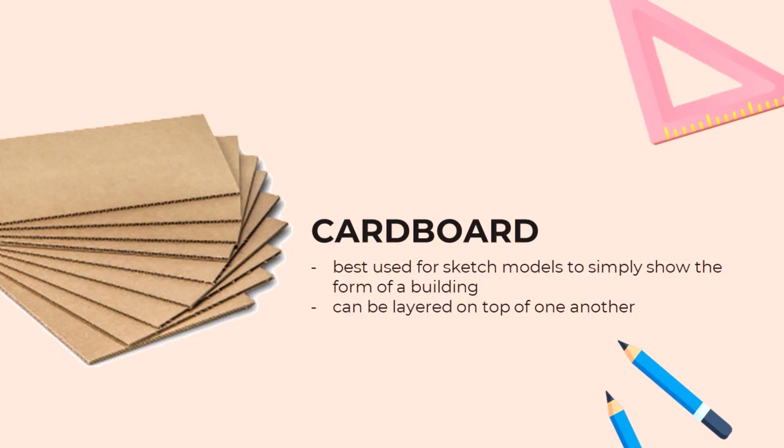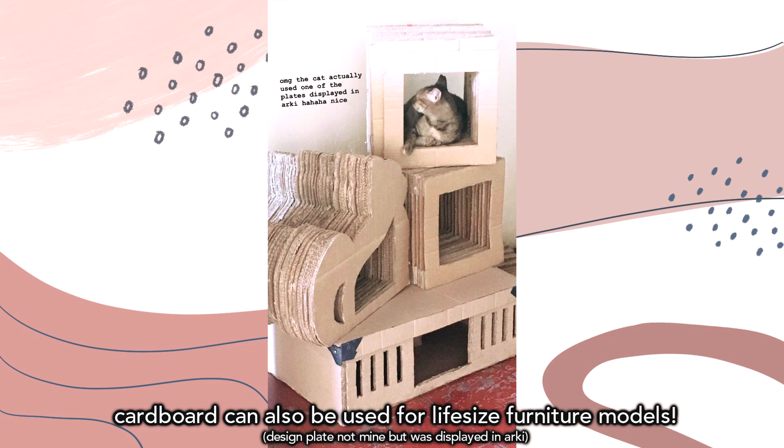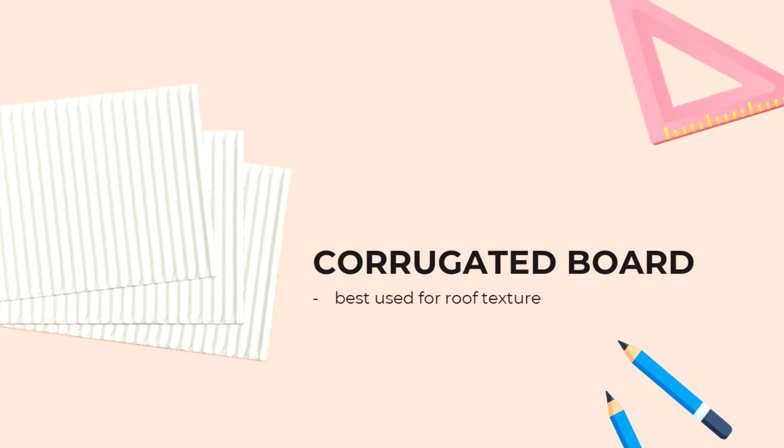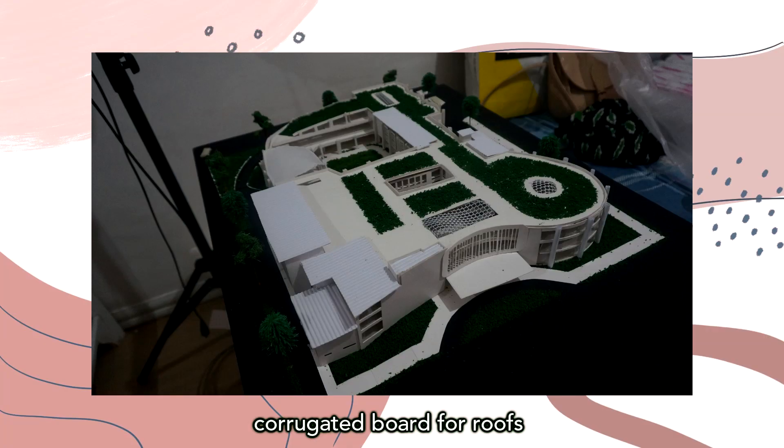Up next is cardboard. This is good to use when you just want to show the shape of your building and don't need a lot of detail. Usually you just layer it on top of one another to create that 3D effect. We actually had a few activities where we just used cardboard for sketch models to explore creativity. Then we have corrugated board. I love using this for my roofs — it's corrugated, like an accordion, so it already has that look and texture of a GI roof, or yero in Tagalog. It makes the model look a bit more realistic without much effort.